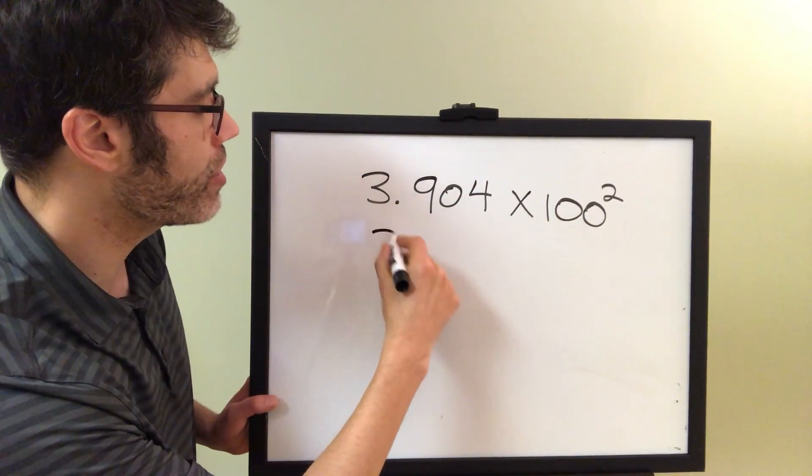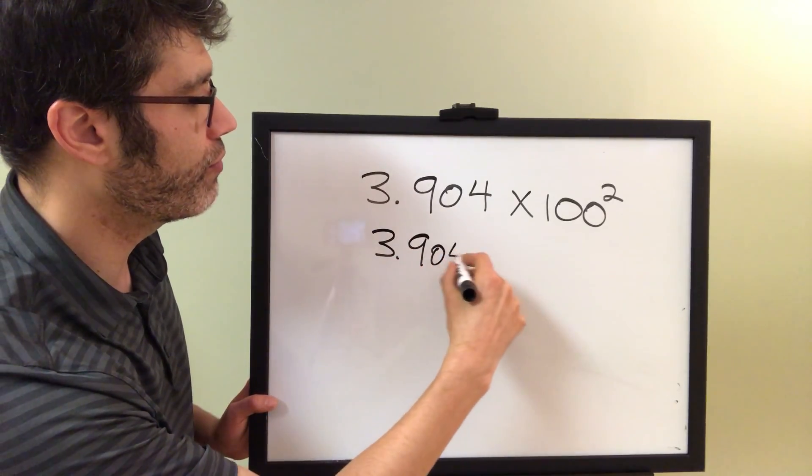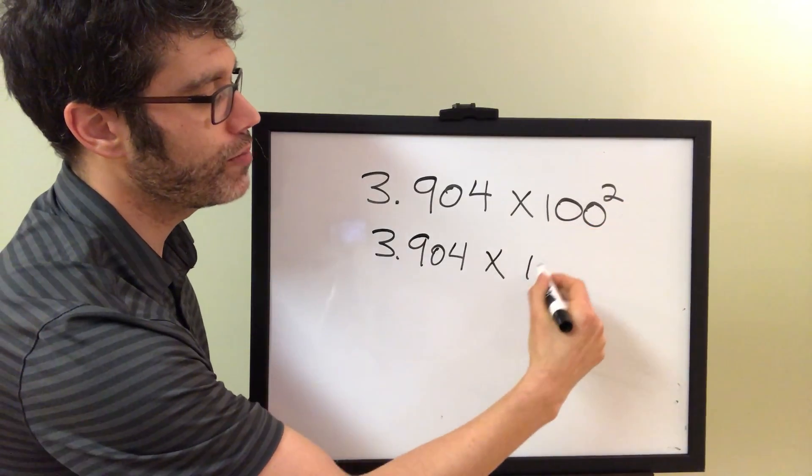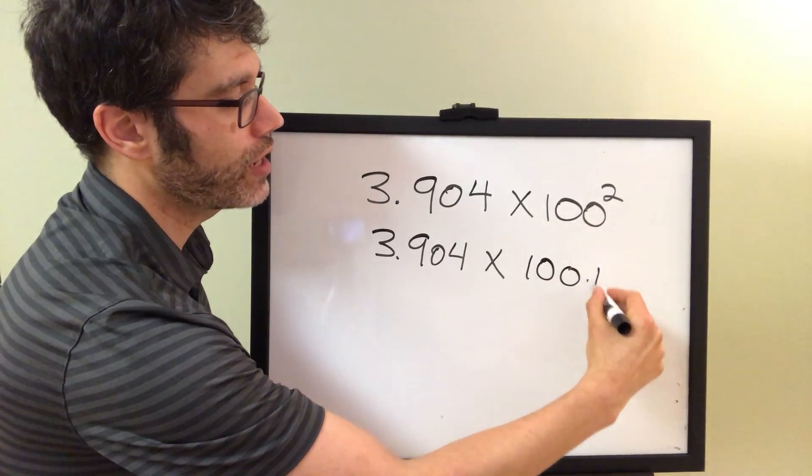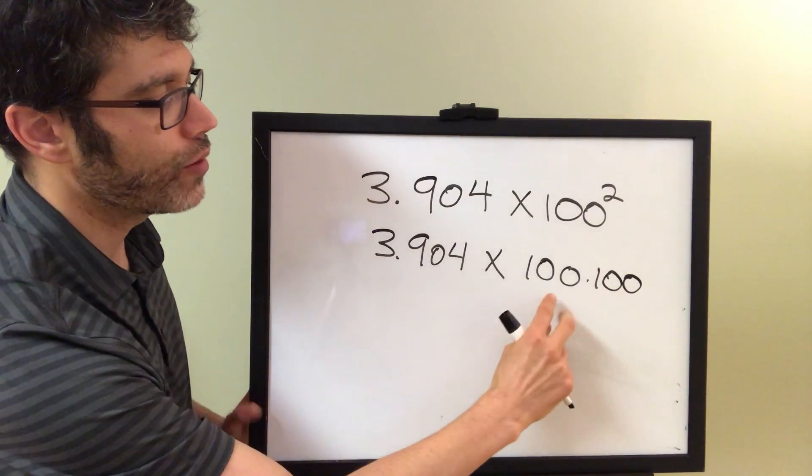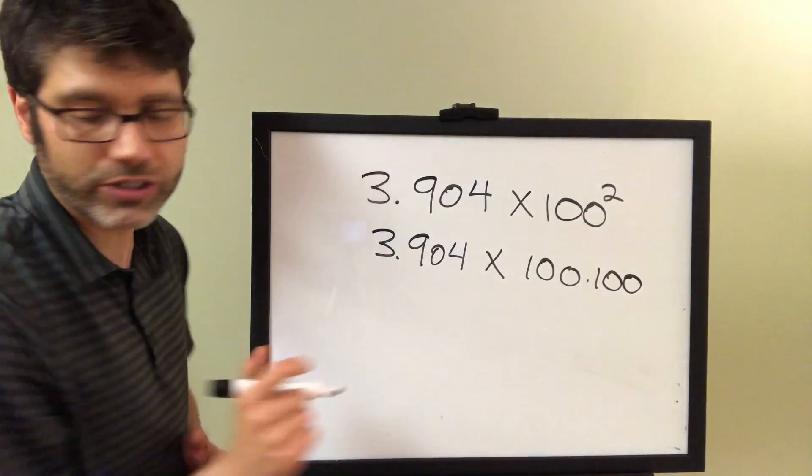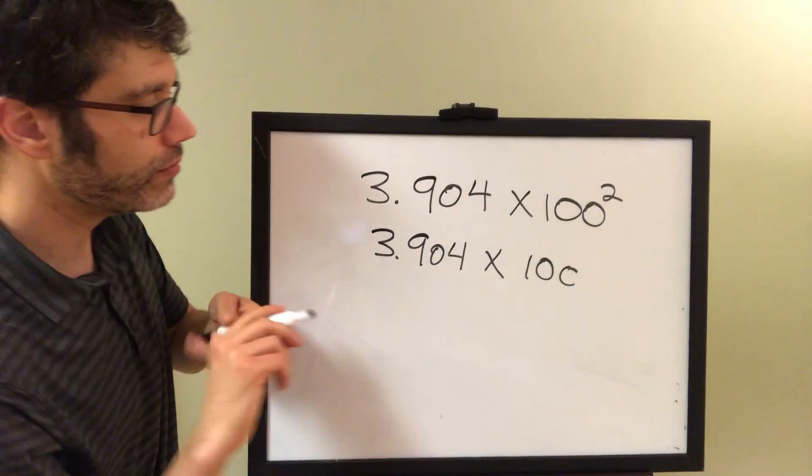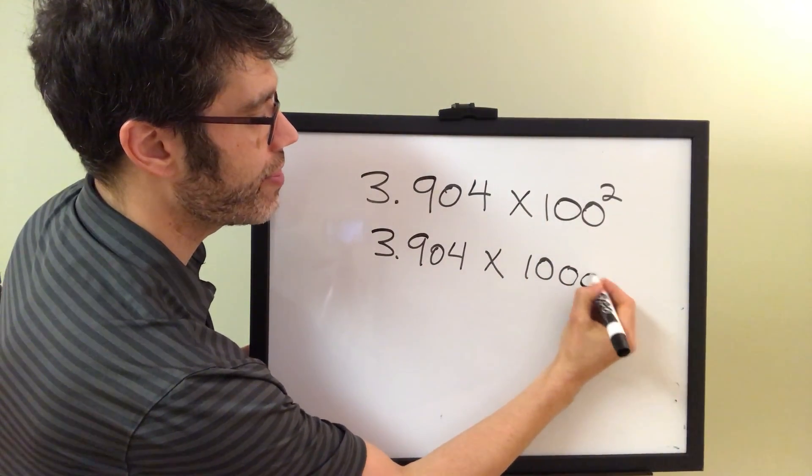So this would be 3.904 times, let's see, this is 100 squared. So that would be 100 times 100. Well, we're going to have four zeros. So that's a 1 and four zeros, or 10,000. So that would be 10,000.